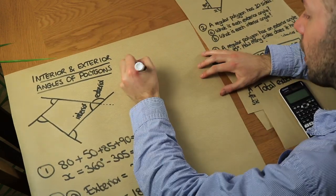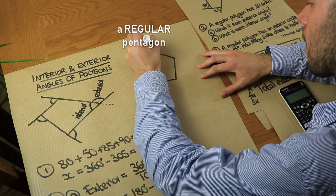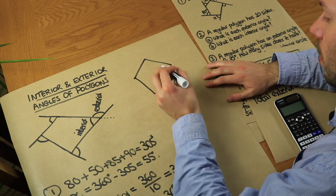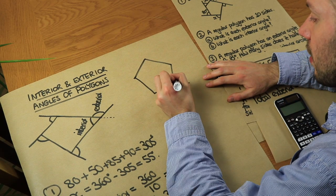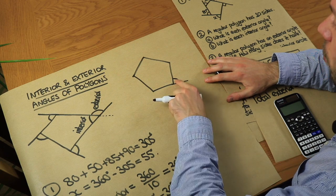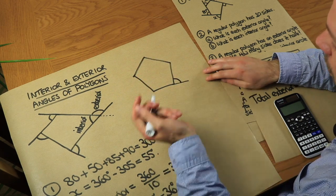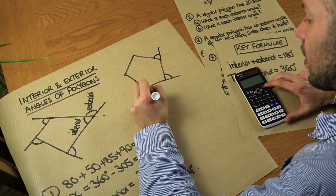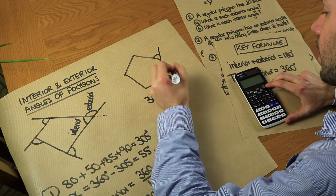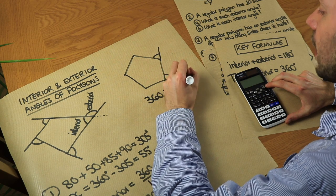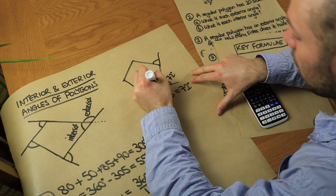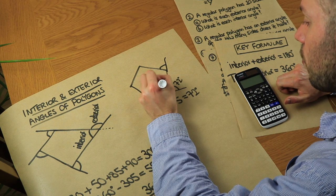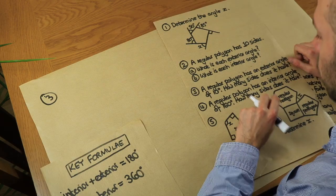Let's do another example: a regular pentagon. We want to find its interior angle. We extend one side to create an exterior angle. The five exterior angles add up to 360° and are all equal, so each exterior angle is 360 ÷ 5 = 72 degrees. Since the interior and exterior angles add up to 180°, the interior angle is 180 − 72 = 108 degrees.